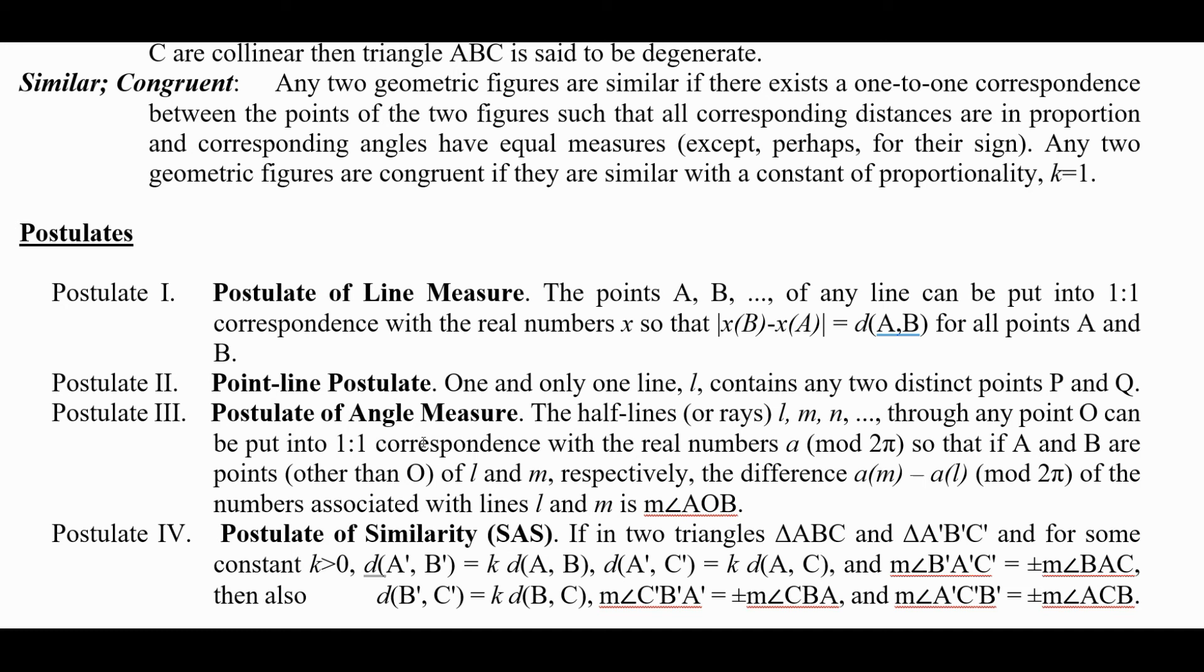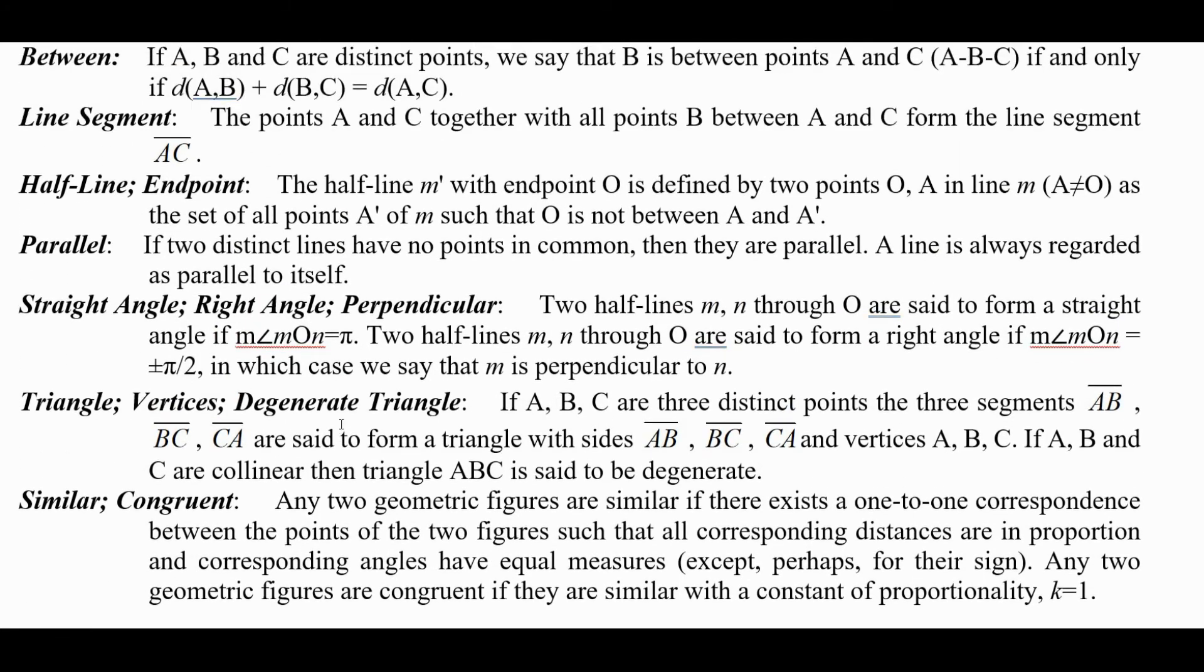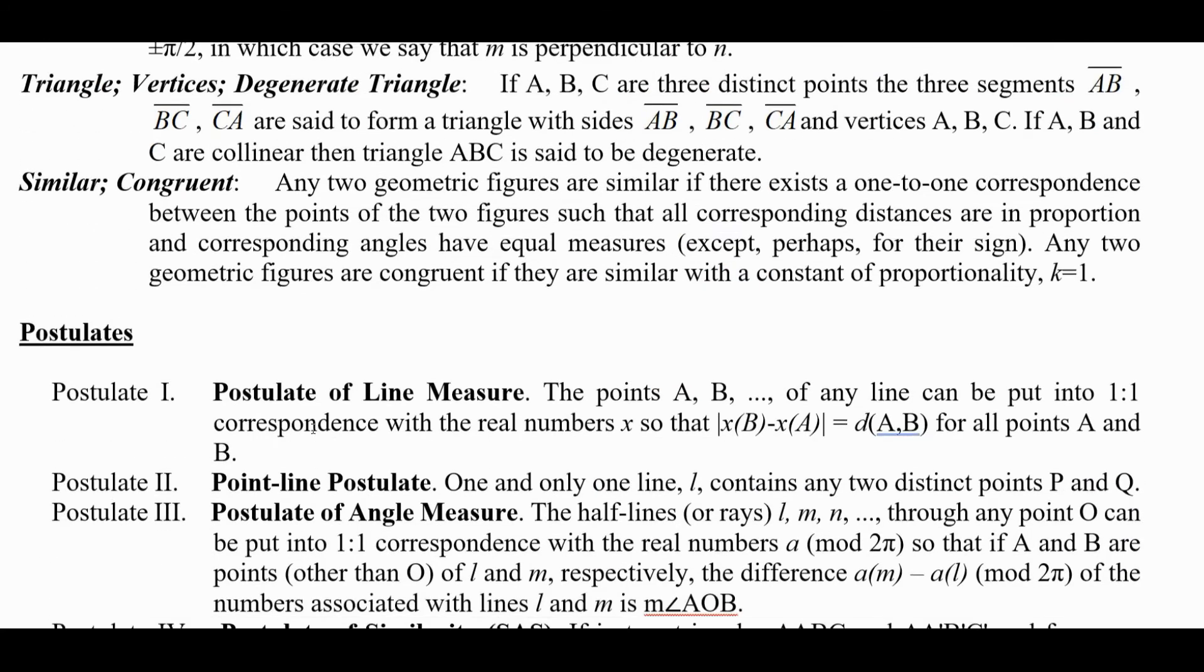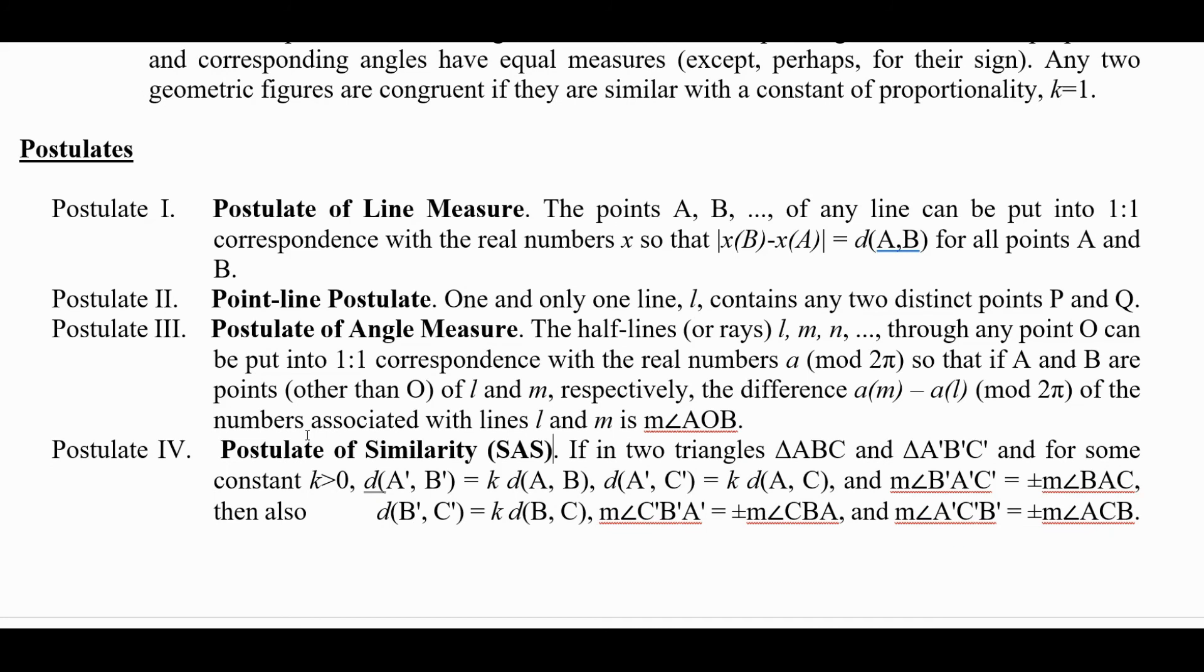So the synthetic way is the way of Hilbert and Euclid and the analytic way is the way of Birkhoff. So in Birkhoff's analytic way he has assuming the properties of the real numbers and then you get this idea that we have one-to-one correspondence between points on the line and real numbers and angle measures and real numbers. So what we can do is we can get the properties of the real numbers to tell us something about the geometry. Next video we'll talk about at least the incidence postulates that we're going to use in my course.